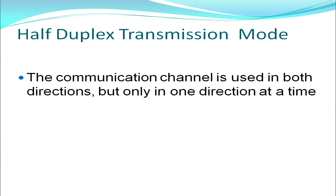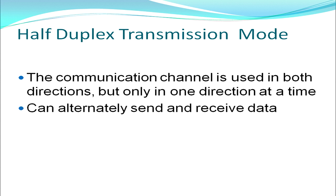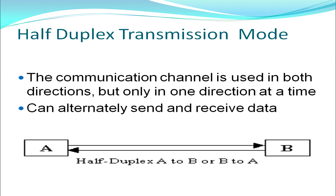Next is the half-duplex transmission mode. It covers the drawback of simplex mode as the communication channel is used in both directions, but only one direction at a time. If transmission is happening from A to B, it will not happen from B to A during that time. Sending and receiving of data is done alternatively in the two directions.